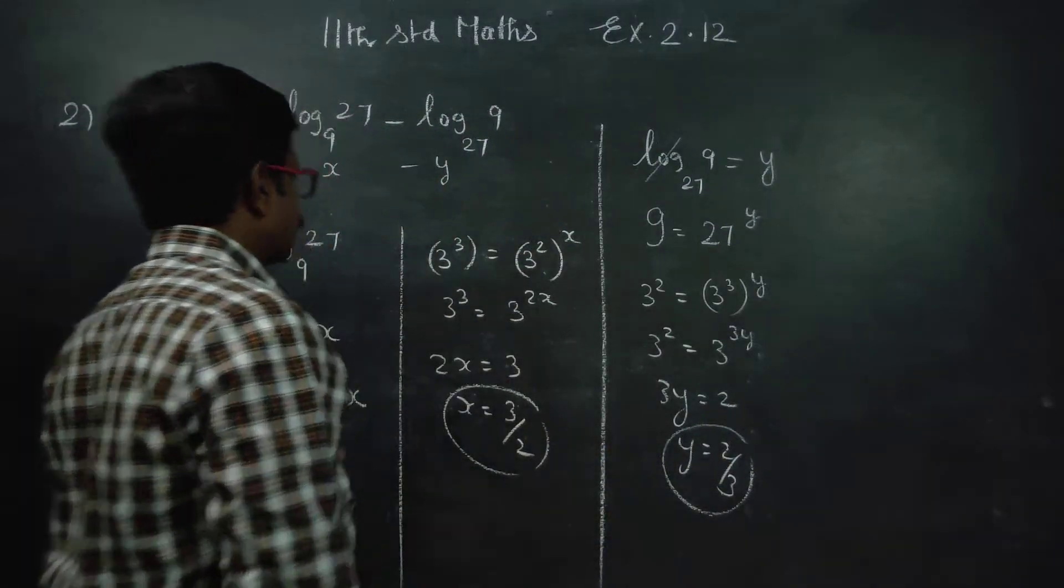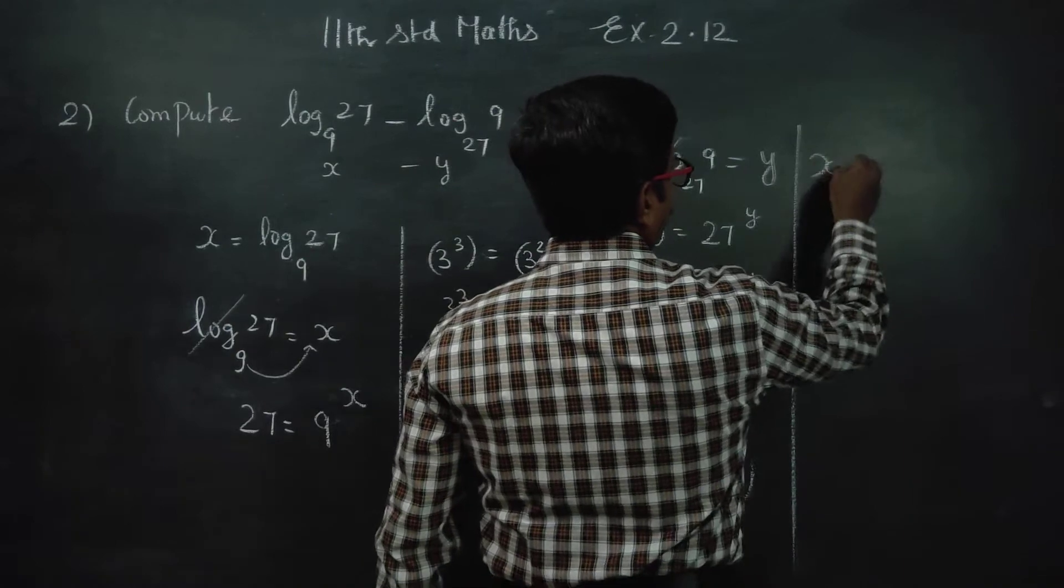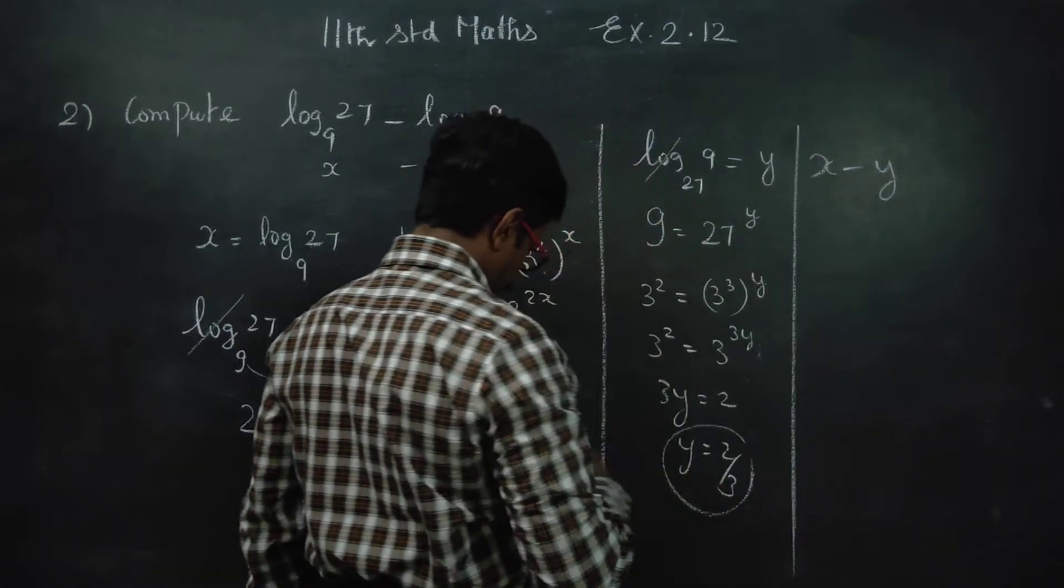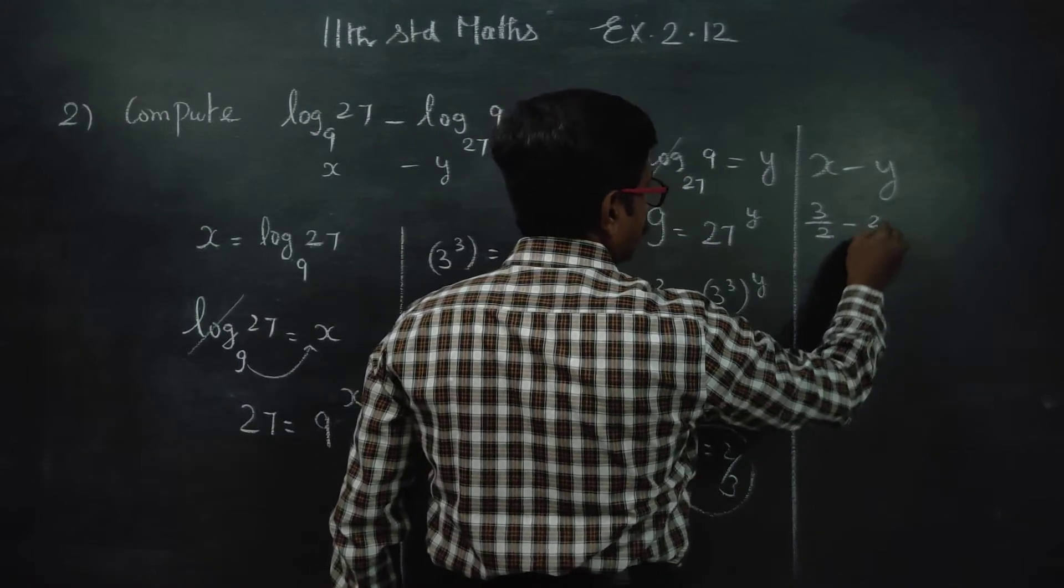Now X is ready, Y is ready. I want X minus Y. What is X minus Y? X is 3 by 2 minus 2 by 3.